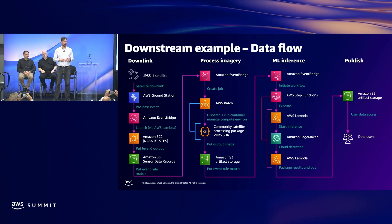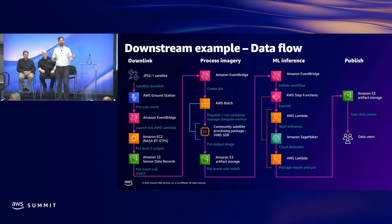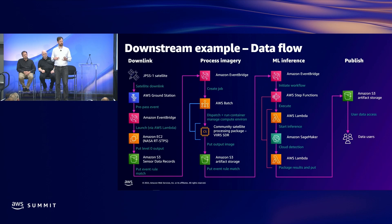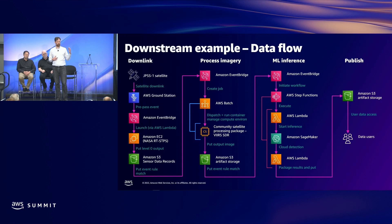Here's an example architecture we've actually built and operated — something a few of us did as a workshop at a previous AWS Summit. What we're looking at is a four-stage pipeline: receiving a downlink and doing initial processing, processing the downlink into imagery, performing machine learning inference with a computer vision algorithm on that imagery, and then generating output products and publishing them so data users can access them. This was built with JPSS-1, which broadcasts constantly — a great thing to demo against because any time you get a pass, you can pull down data and generate imagery.